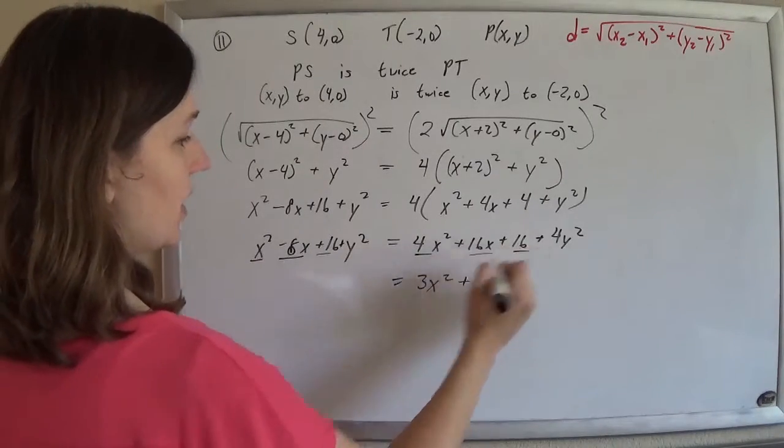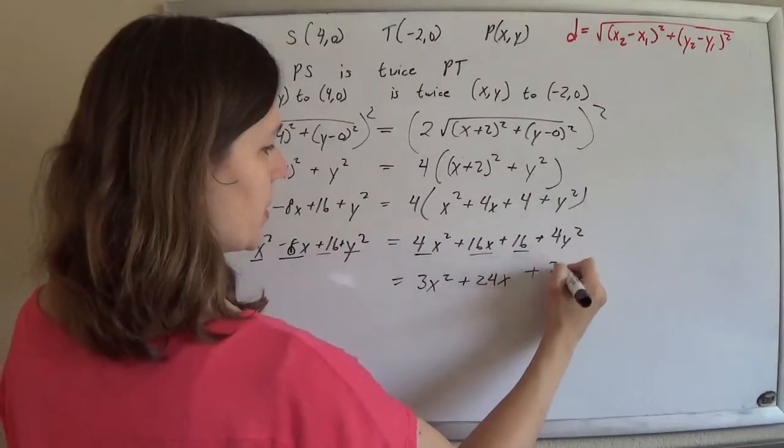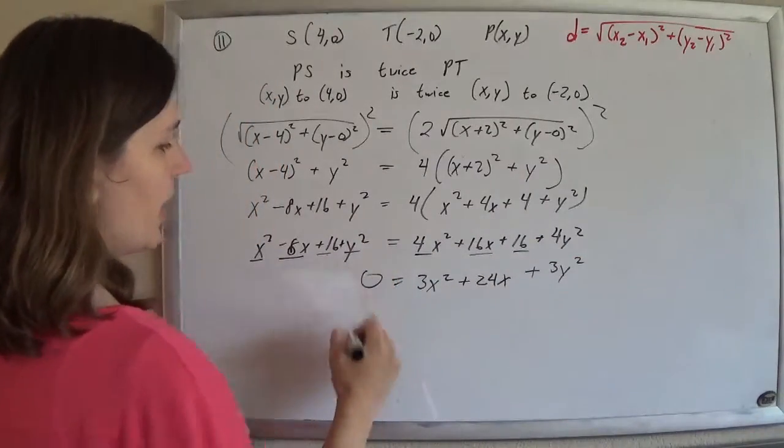If I subtract 16, those will go away. If I subtract the y² from both sides, I'll get plus 3y² over there, and that will equal 0.